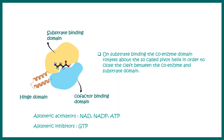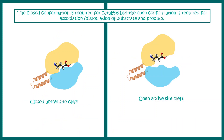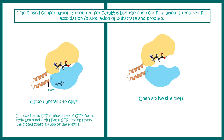The allosteric activators of this enzyme include NAD, NADP, and ADP, whereas the allosteric inhibitor is GTP. The closed conformation is required for catalysis, while the open conformation is required for association or dissociation of substrate and product. In the closed active conformation, GTP forms a hydrogen bond with histidine 454, favoring the closed state, whereas in the open state, arginine 463 interacts with ADP.